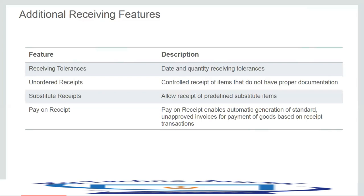Another additional receiving feature is substitute receipts — when entering items in the item master, we have the ability to identify parts that can be substituted for each other. The next receiving feature is pay-on-receipt, which works in conjunction with the accounts payable system to streamline the procurement process by generating invoices to suppliers based on receipt transactions.